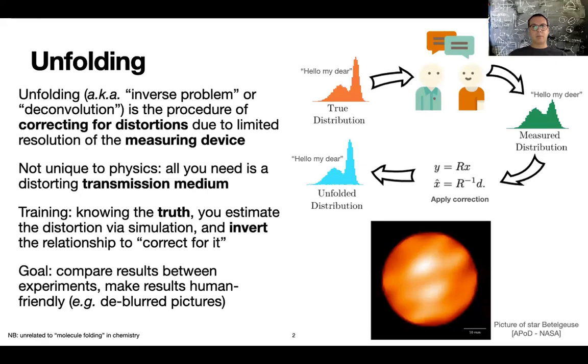So to begin with, let's define what unfolding is. Unfolding, also known as inverse problem or deconvolution, is a procedure to correct for distortions that are due to limited resolution of a measuring device. As a matter of fact, this problem is not unique to experimental physics, and not even just to science, but every time you have a signal that is being transmitted by a medium and the medium applies some distortions, you basically have a situation where you would like to correct for these distortions.